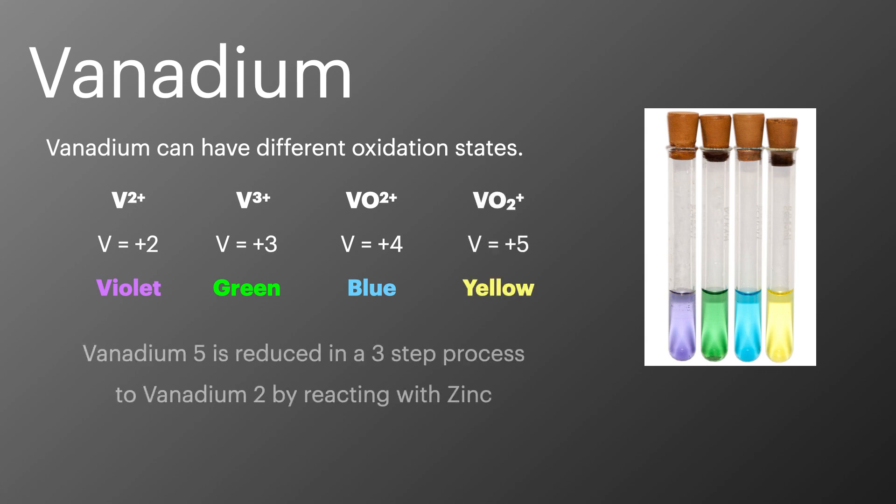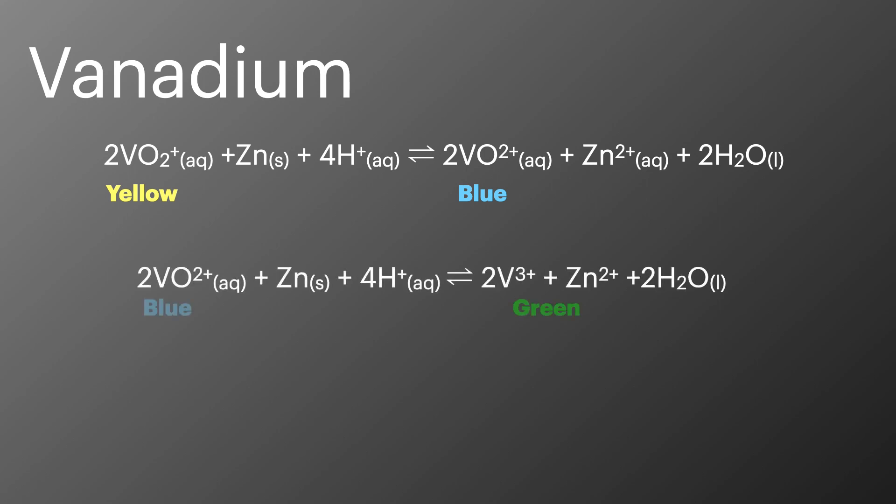We need to know the reactions with zinc which can reduce vanadium 5+ all the way down to vanadium 2+. In this first reaction vanadium 5+ is reduced down to vanadium 4+ by reacting with zinc and the color change that we observe is yellow to blue. In this second reaction vanadium 4+ is reduced down to vanadium 3+ and the blue to green color change is observed. And in the final step vanadium 3+ is reduced to vanadium 2+ and the color change is from green to violet.